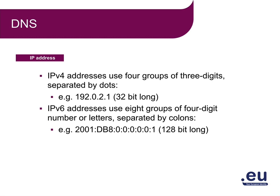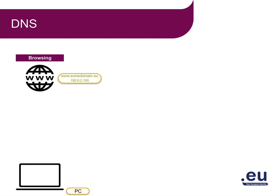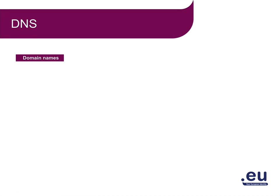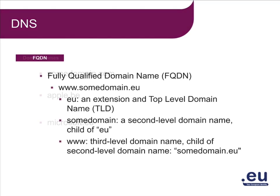Using an IP address to connect to a website is for most people not that easy. Generally, we are not efficient at remembering this kind of information. That's why we use domain names. A domain name is a combination of words and letters and if they have a meaning, it becomes even easier. An IP address like 192.0.2.100 is more difficult to remember than www.somdomainium.eu. Other examples are somdomainium.com, apple.be, or microsoft.eu.